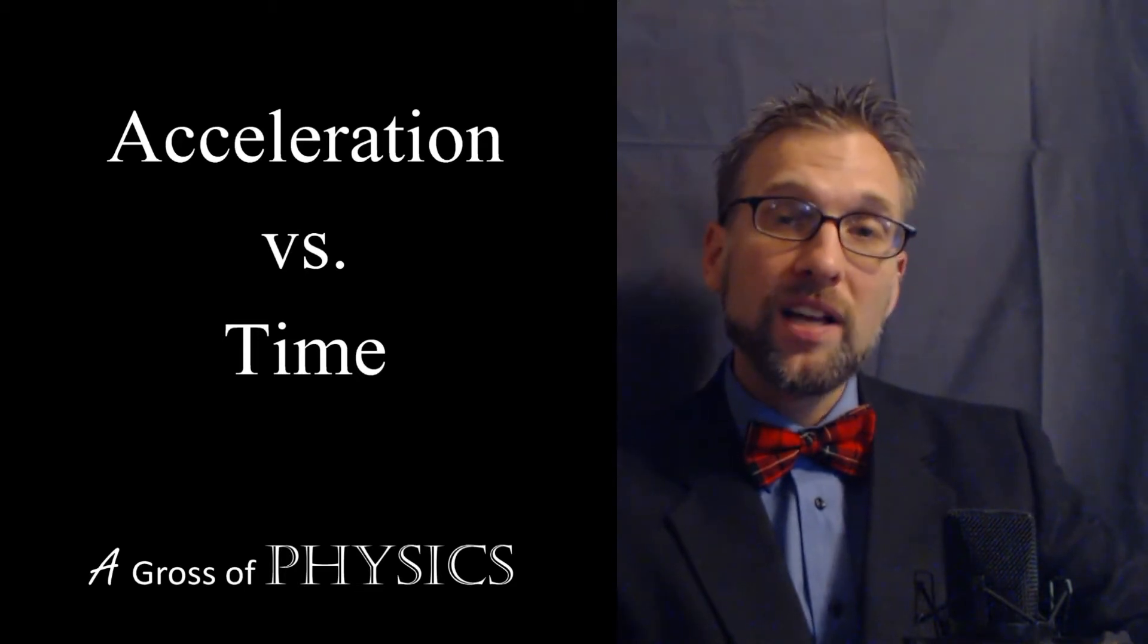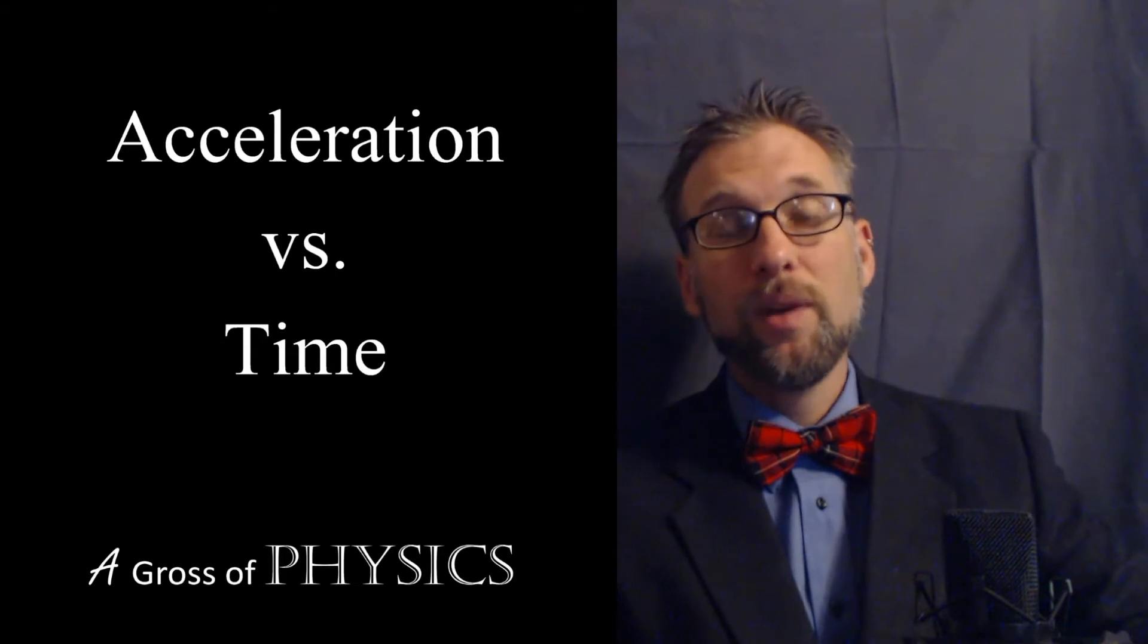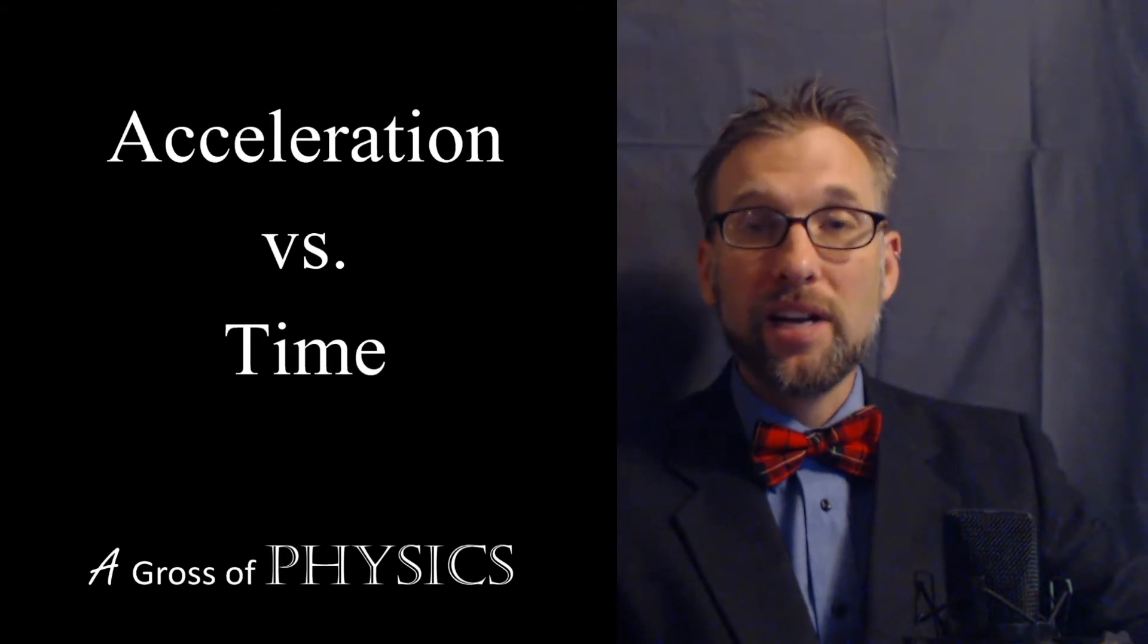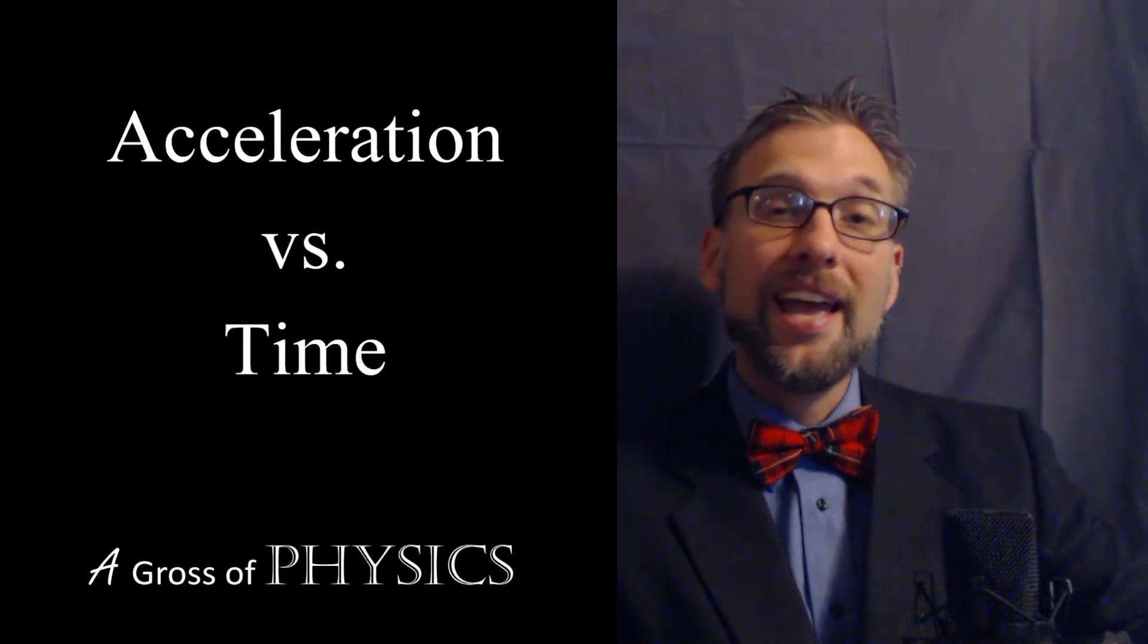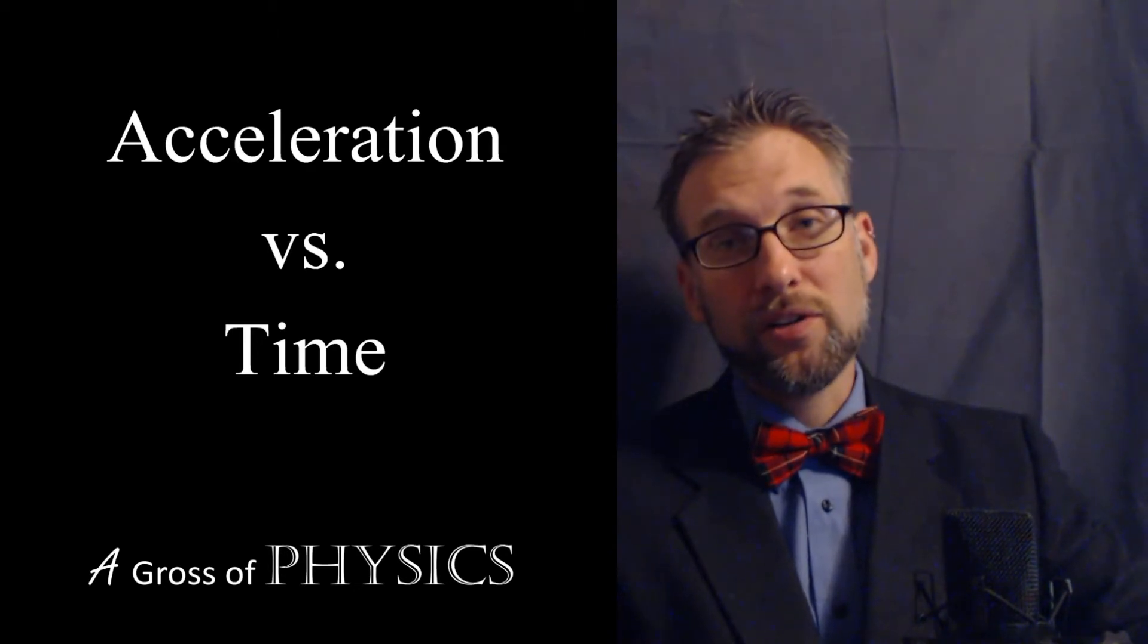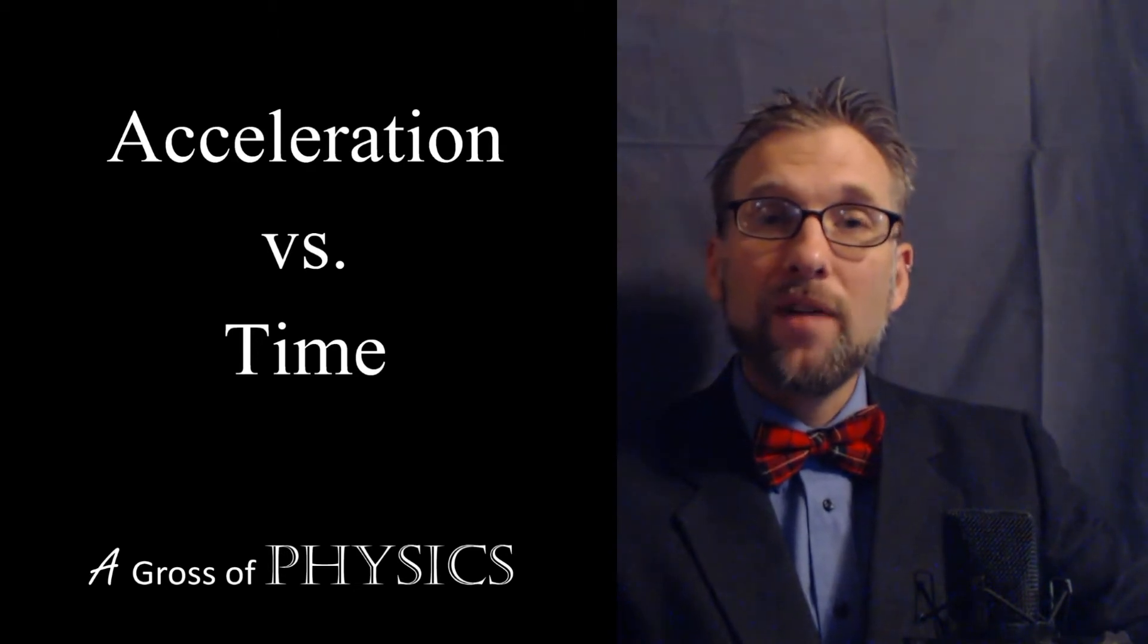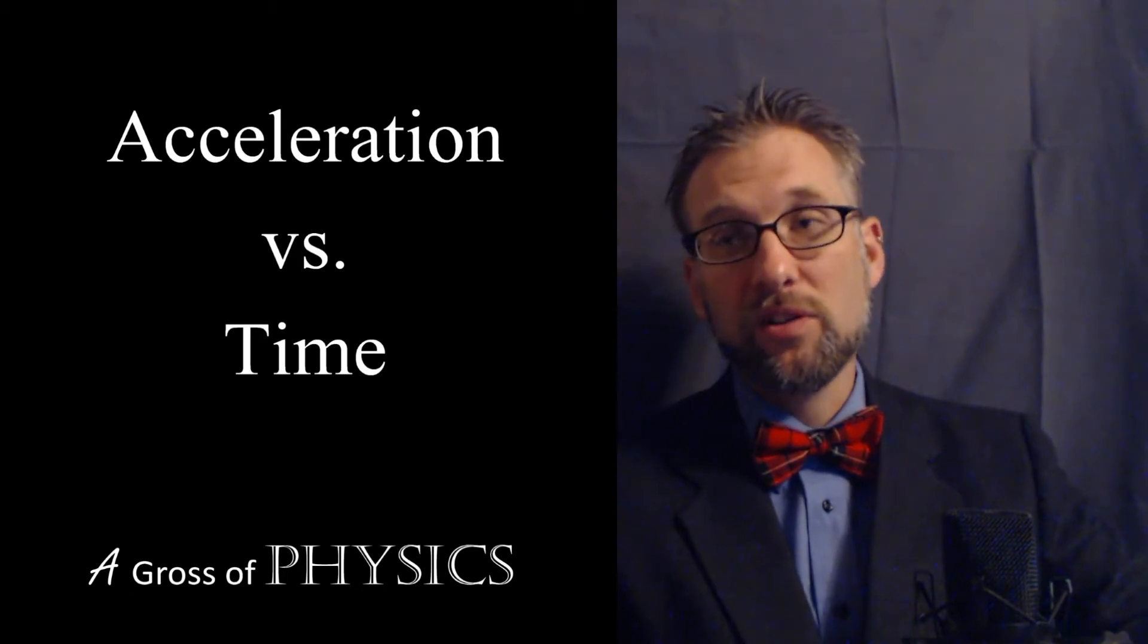We can find the slope of the velocity versus time and get the acceleration. We can find the area of the velocity versus time and get displacement. So the acceleration versus time graph is kind of like our dead end. It's the end of the journey for our position functions because we cannot find the slope of the acceleration versus time.